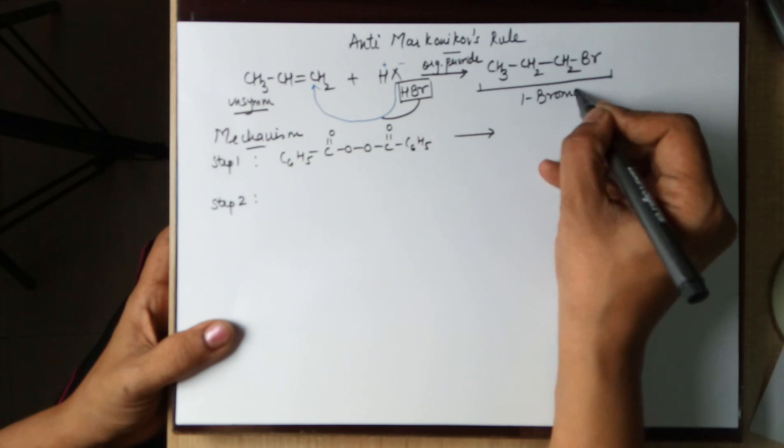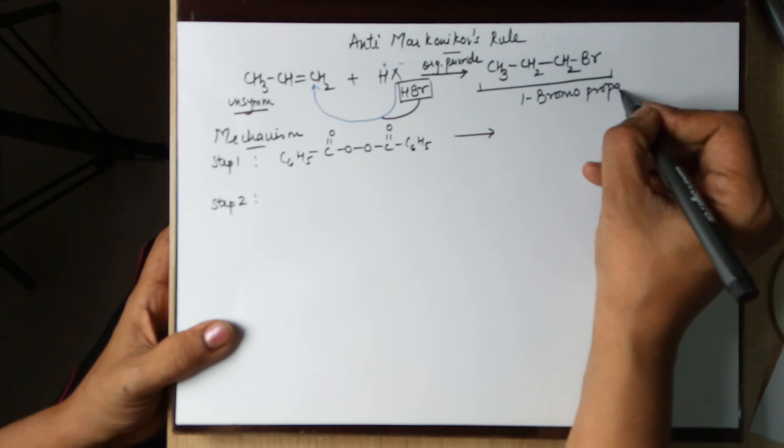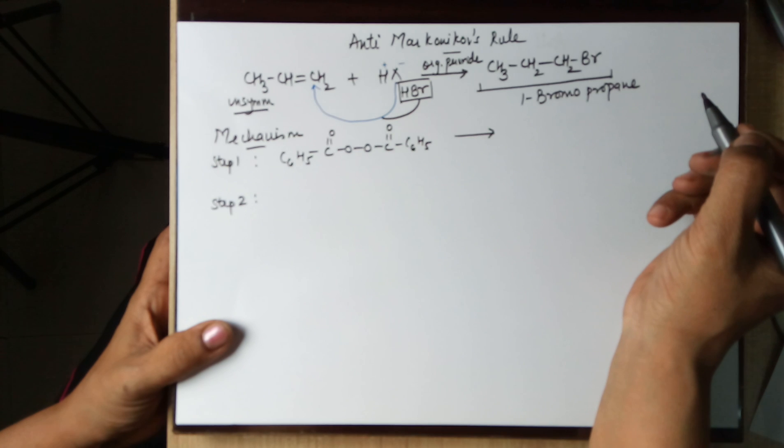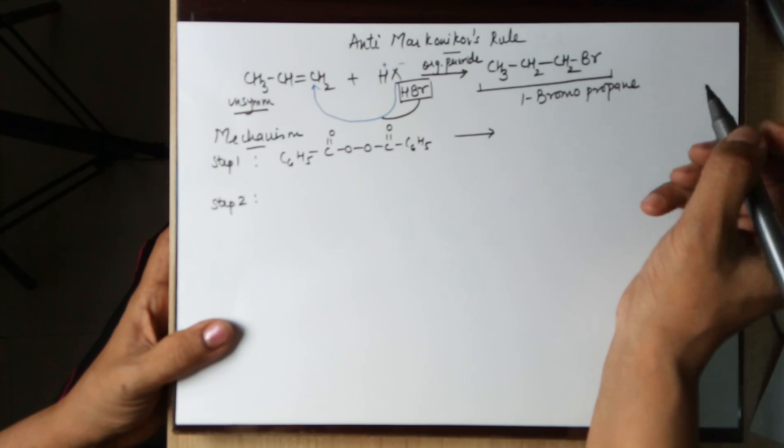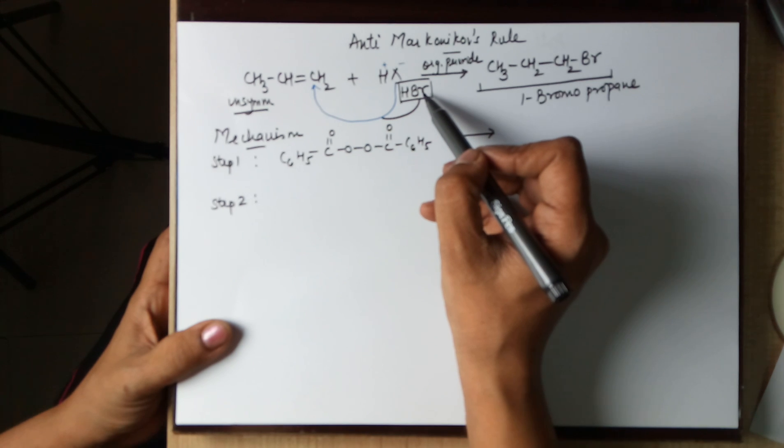This is 1-bromopropane. Had it been a Markovnikov's rule, that is you would not have written organic peroxide. In that case the negative identity would have gone to the double bonded carbon having less number of hydrogens directly attached to it.